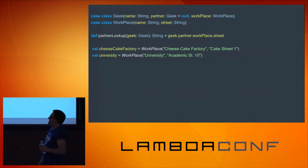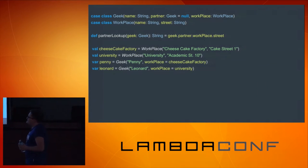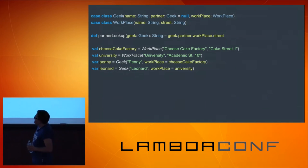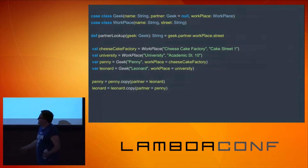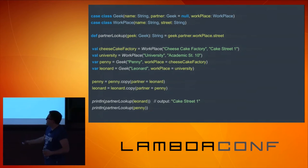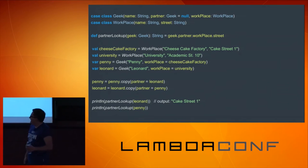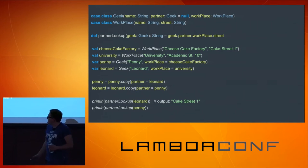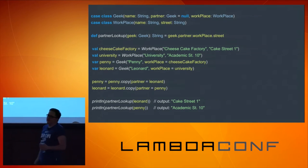So imagine that we have a Cheesecake Factory, we have a university, there's Penny and Leonard. Penny works at Cheesecake Factory, Leonard works at university. They live together now, and if we call this method and print out the results, we will learn that Leonard can find his girl at the Cheesecake Factory, and Penny can find Leonard at Academic Street 10.